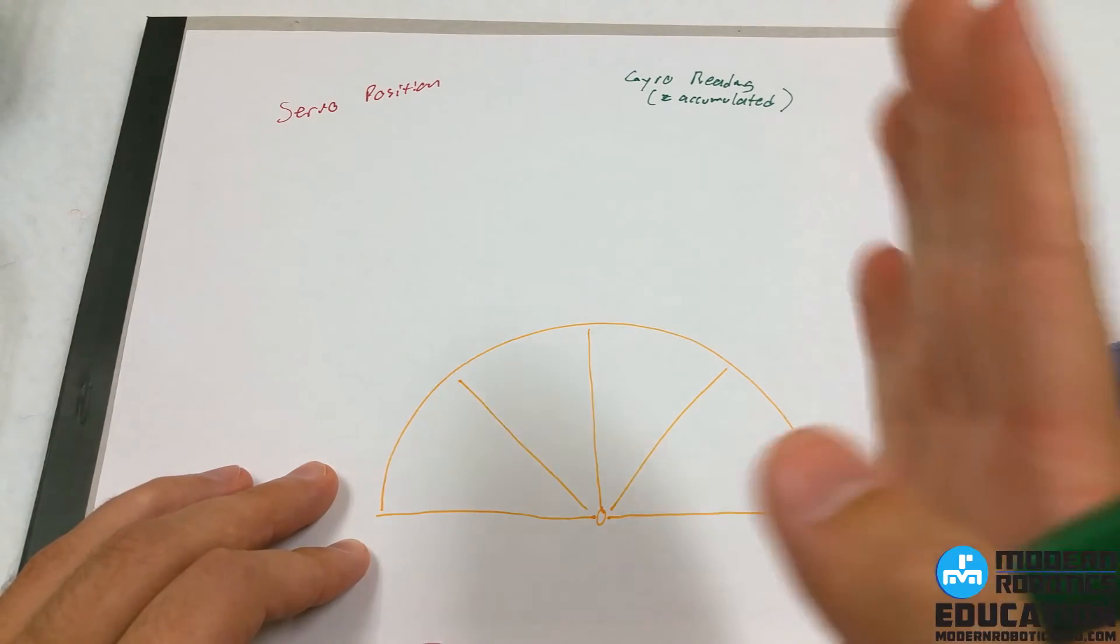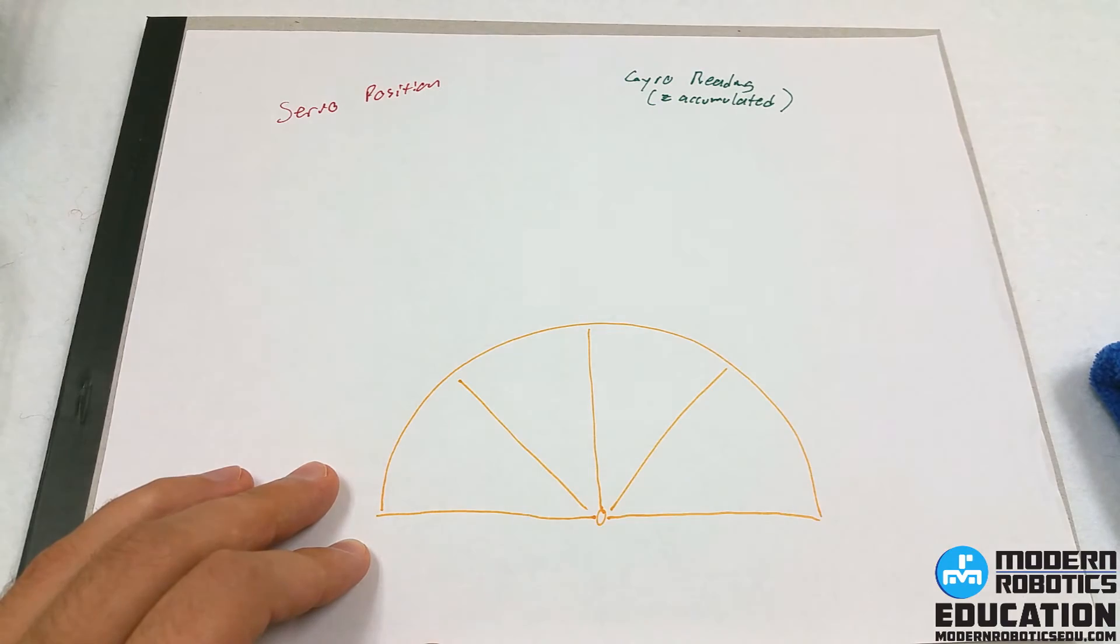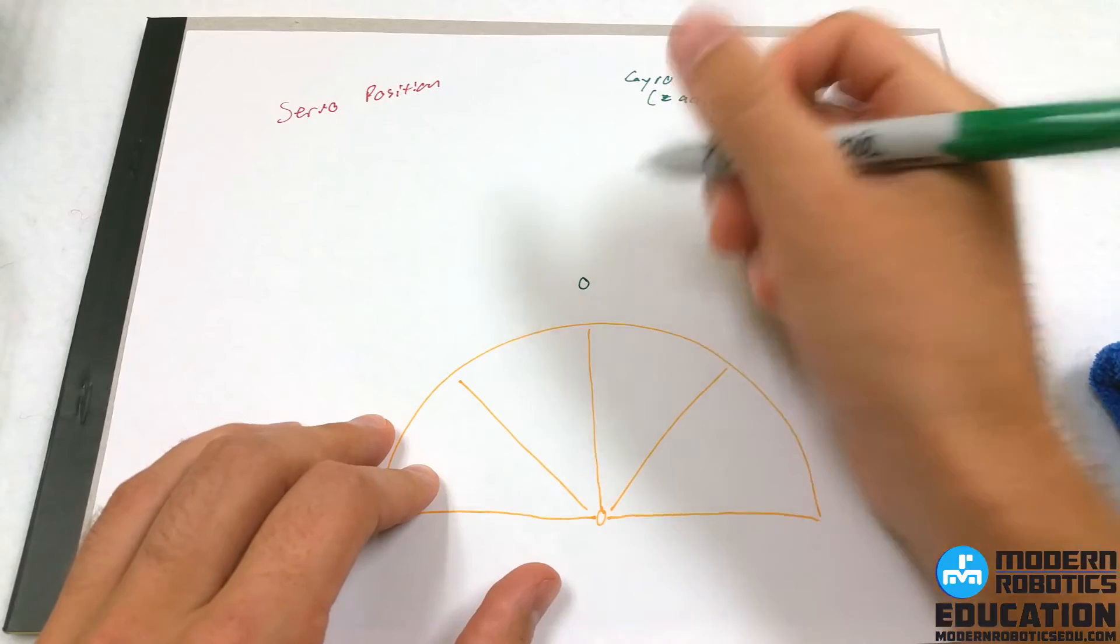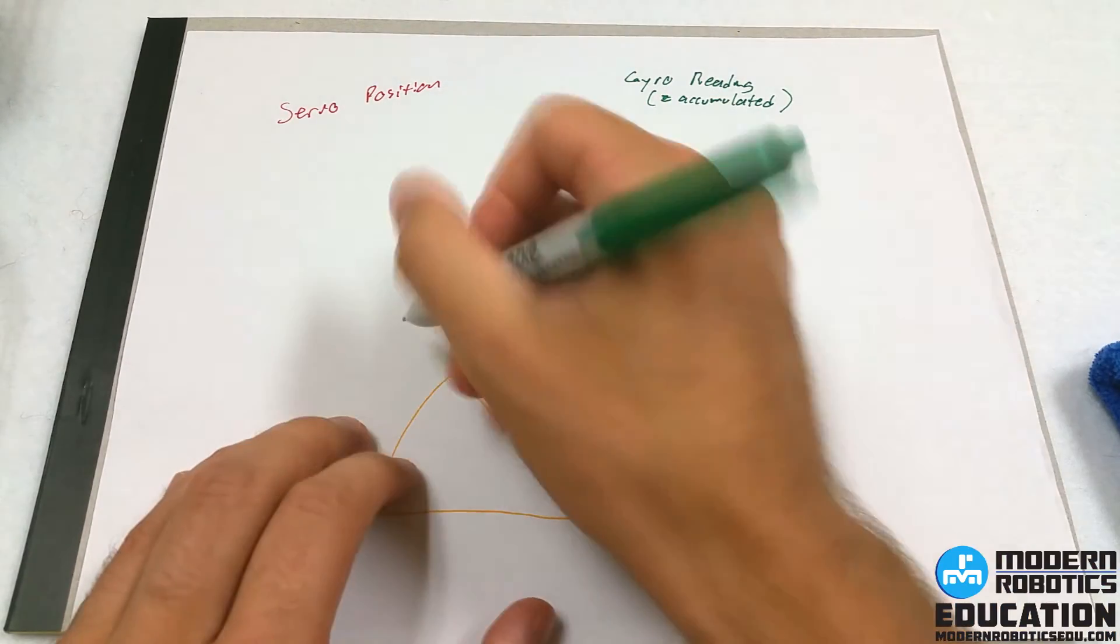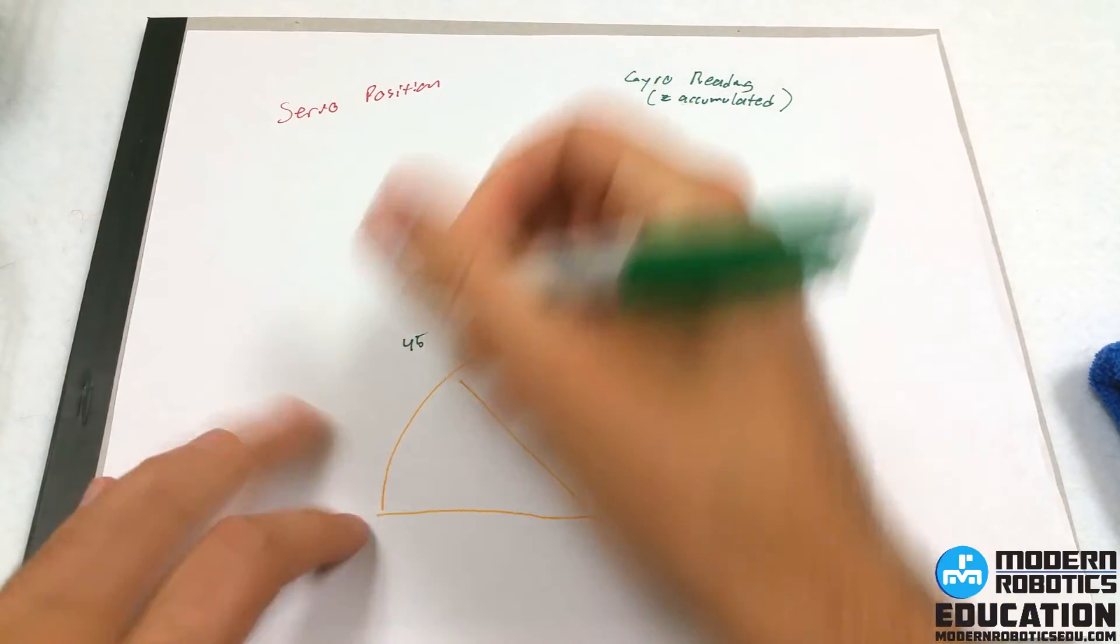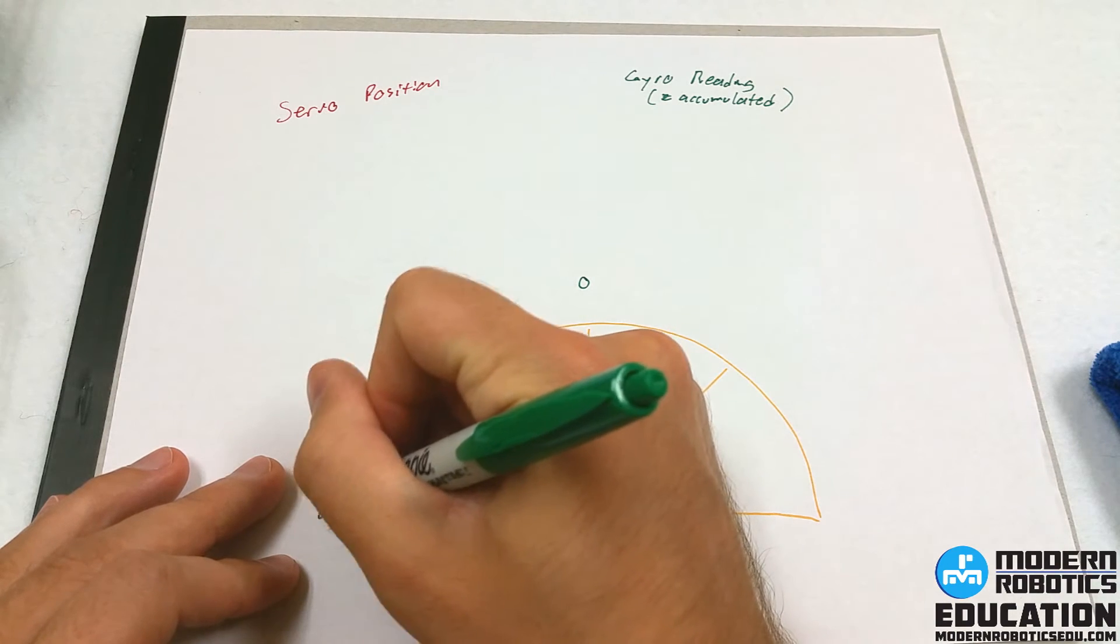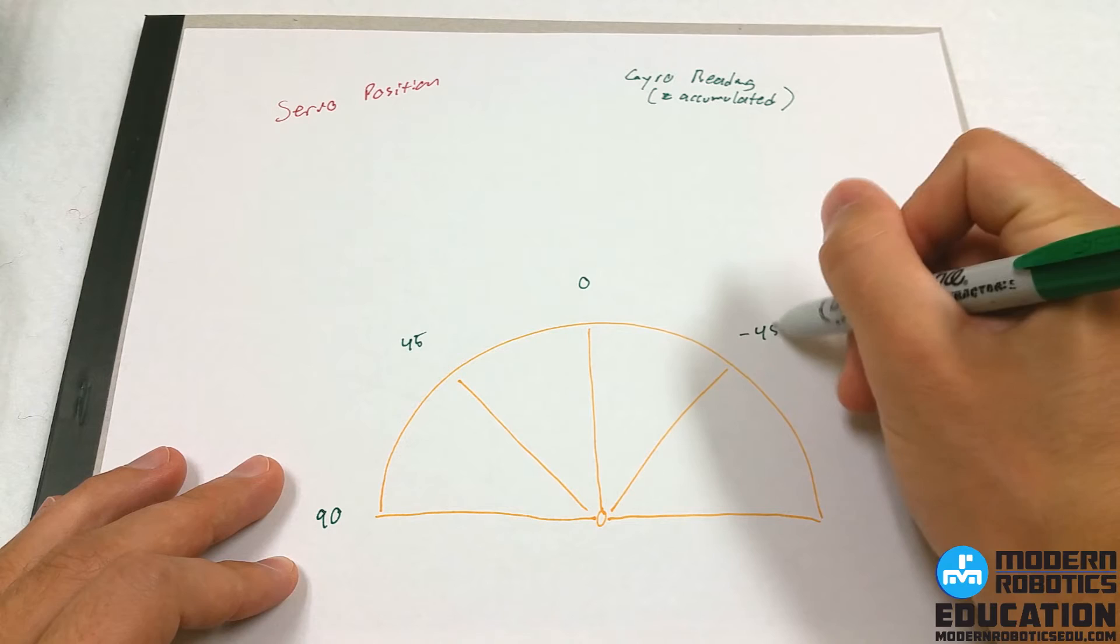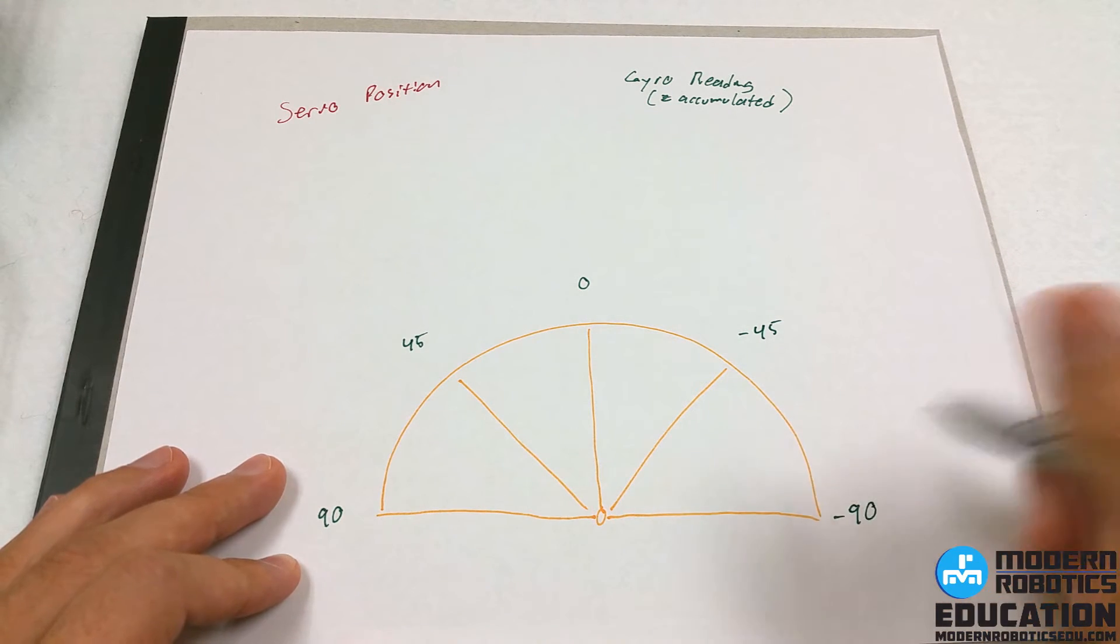When the gyro reads back, since we calibrate it when it's straight forward, the gyroscope will read 0. On the left it's going to be positive numbers, so this will be 45, this will be 90. This will be negative 45, this will be negative 90.